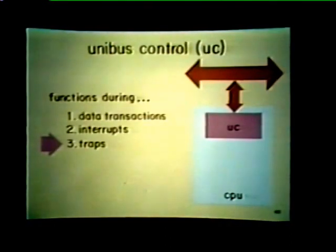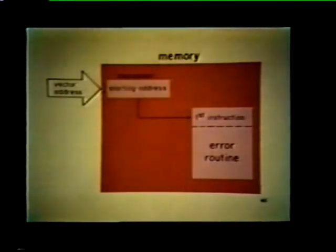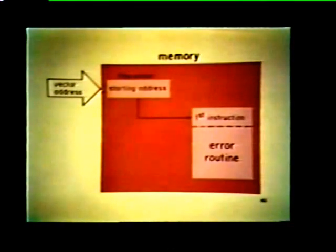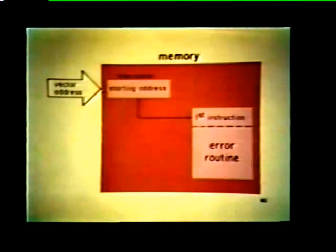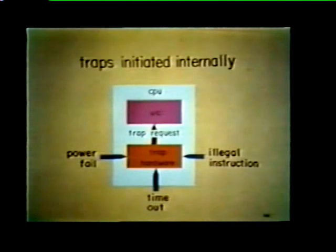The unibus control also plays a major role in handling traps. A trap is similar to an interrupt — it causes the CPU to exit from its main program and jump to a predetermined memory location containing a trap vector. This trap vector supplies the CPU with the starting address of an error routine, which the processor then executes before returning to the main program. Interrupts are initiated by external devices; traps are not — they are initiated by hardware contained in the CPU.